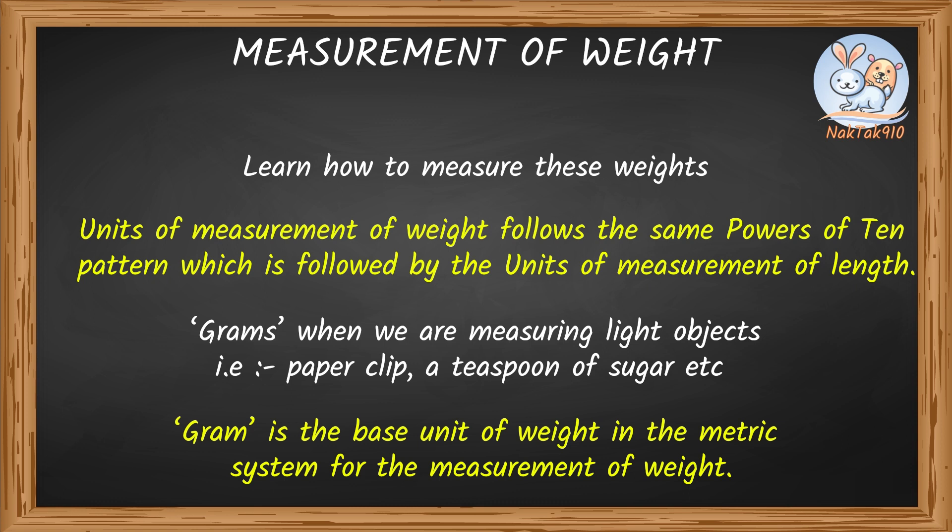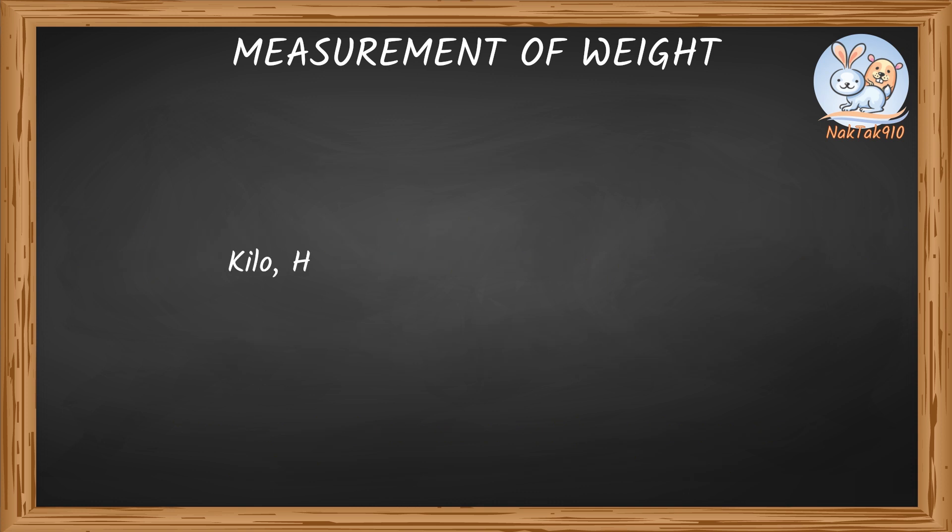We start with the base unit and just add prefixes to the unit to make other units. The prefixes which we add to this meter are kilo, hecto, deca, deci, centi, and milli.